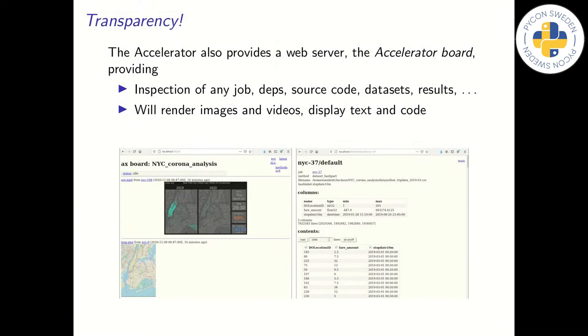Transparency. By transparency, we mean the ability to visualize, check and validate each and every part of a project's processing flow. Due to the nature of build scripts and job directories, there are always clear connections between all parts of a project. To simplify visualization and navigation of the processing flow, the accelerator runs a web server called Board that can be accessed using a standard web browser. The accelerator board can be used to inspect jobs, datasets, dependencies, source code, results, any printed output text, and so on.